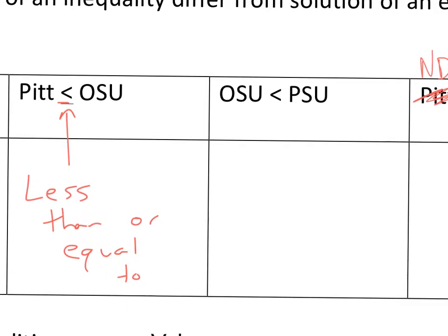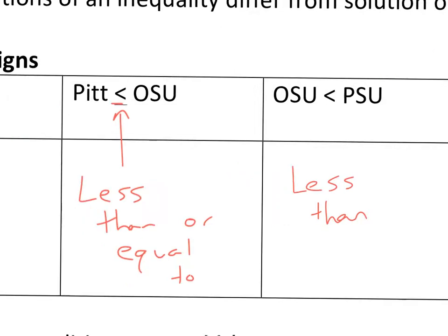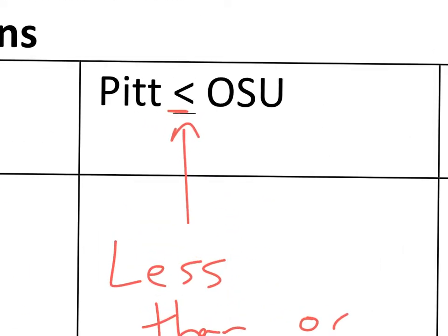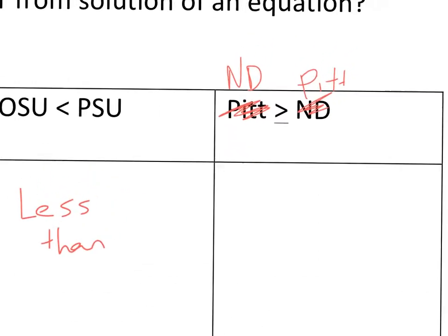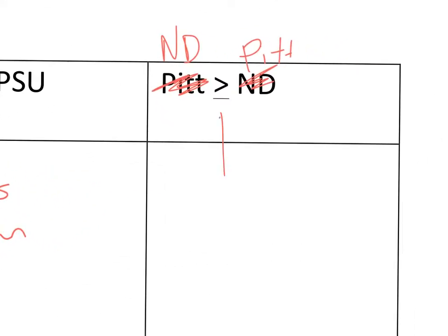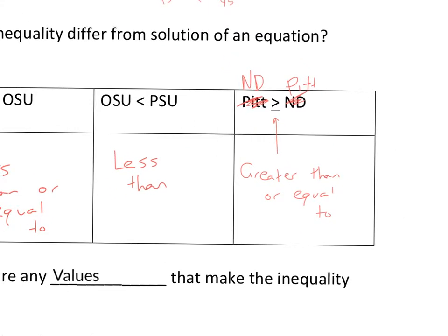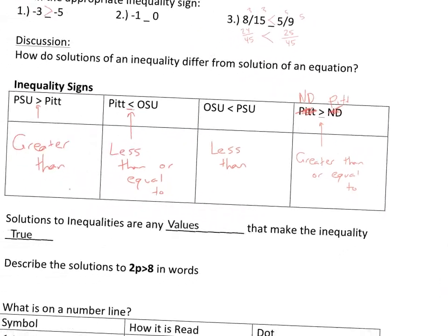This symbol is the straight less than — notice no line underneath, so it does not include equal to. Pitt is either worse than or equal to Ohio State as far as the worksheet is concerned. The last one is the greater than or equal to symbol. Those are the four inequality symbols, and the solution is basically any value that will make the statement work.